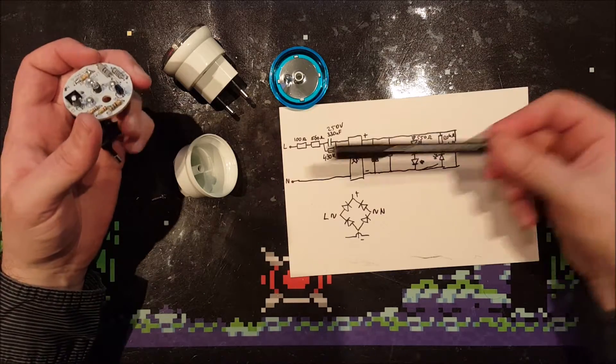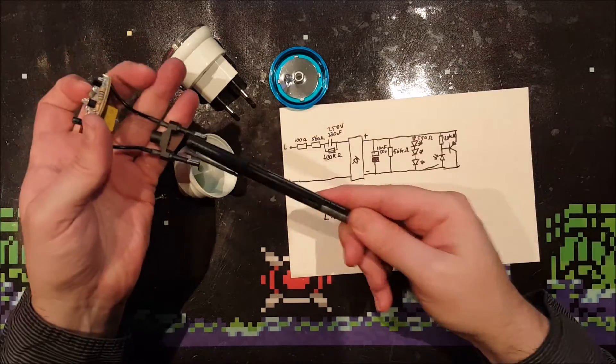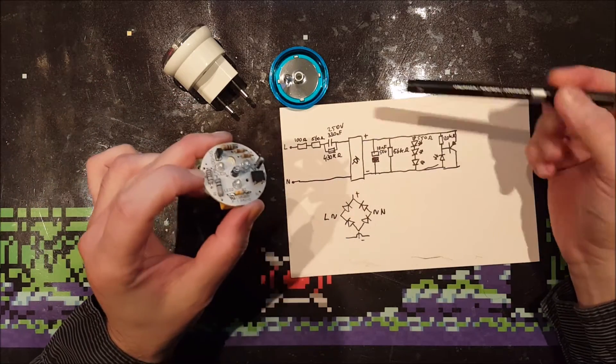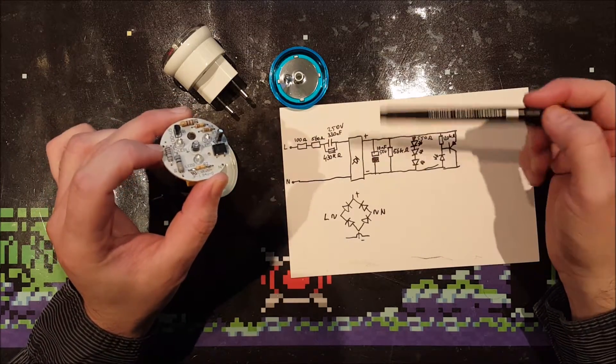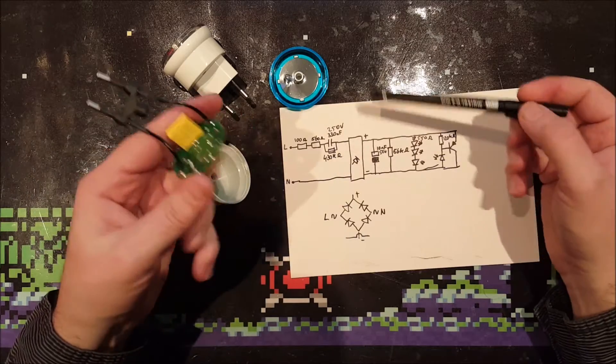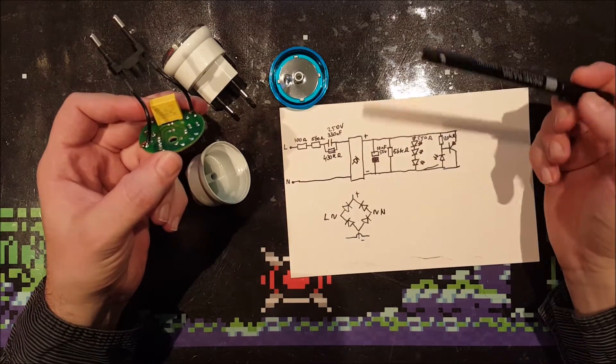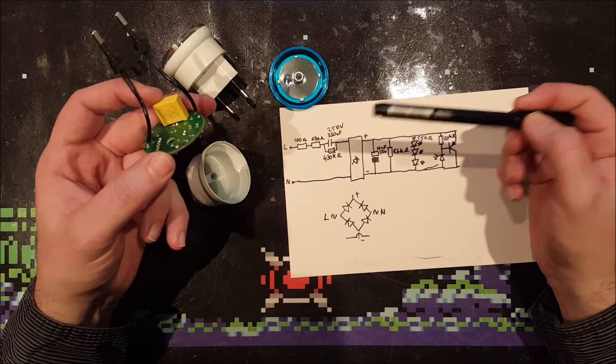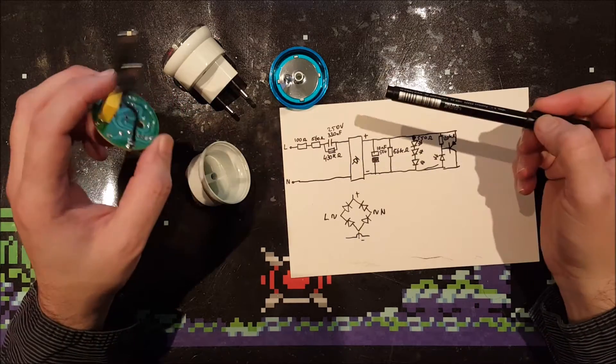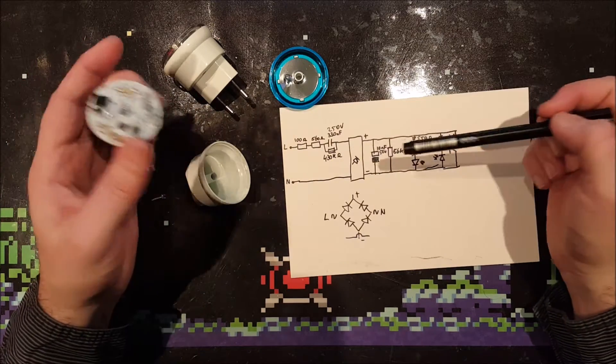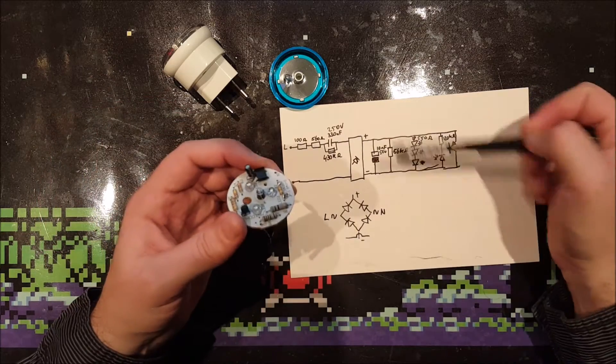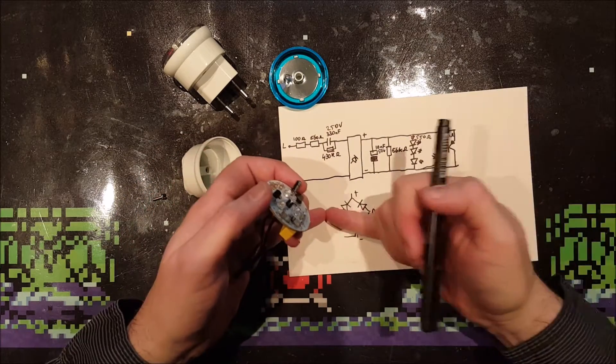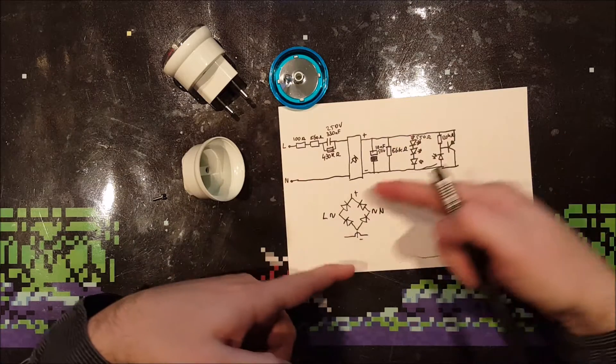So let's see. This is what happens. This is the circuit board. Live and neutral over here. The plug goes directly through these two giant inrush limiting resistors. 101 and 560 ohm. Goes through the capacitor. A 250 volt and 330 nanofarad capacitor. A little bit too low to my opinion. Then there is a discharge resistor of 430 kilo ohm resistor. Goes through the bridge rectifier over here.